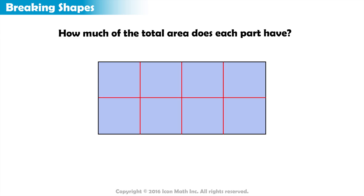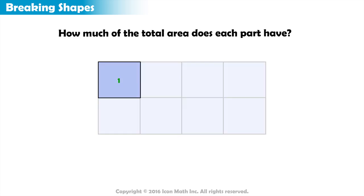Dividing a shape means dividing its total area. So here, each part is one out of eight equal areas, or we can say one-eighth of the total area.